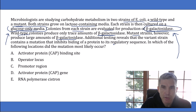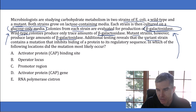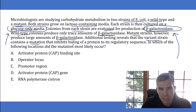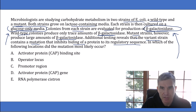Then there's this super confusing sentence: additional testing reveals that the variant strain contains a mutation that inhibits binding of a protein to its regulatory sequence. They've changed the name from mutant to variant strain, which alone makes this confusing. Basically what they're telling you is that a protein that should shut down the lac operon has failed to do so in the mutant colonies, and they're asking you where that mutation most likely occurred.